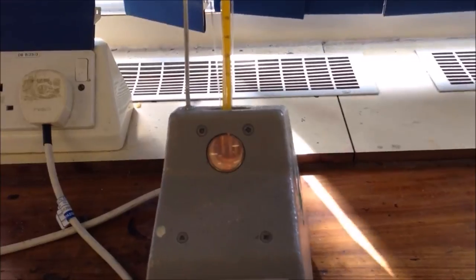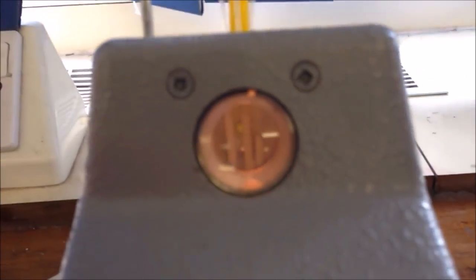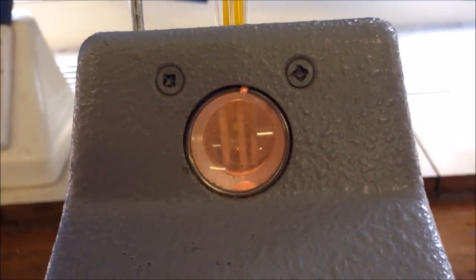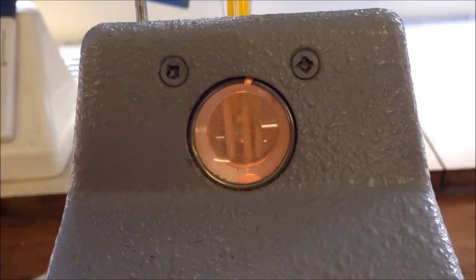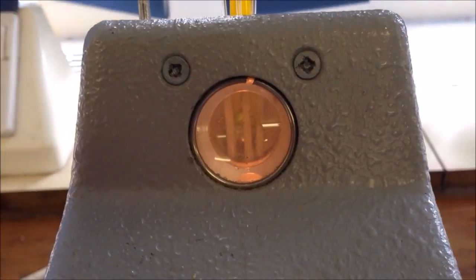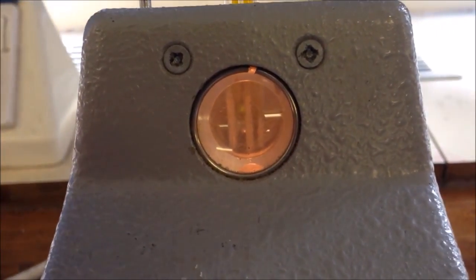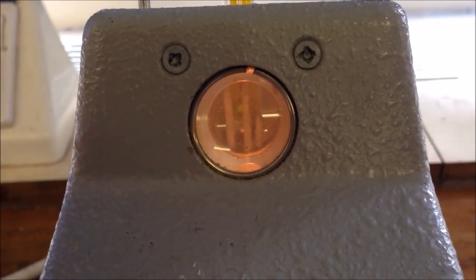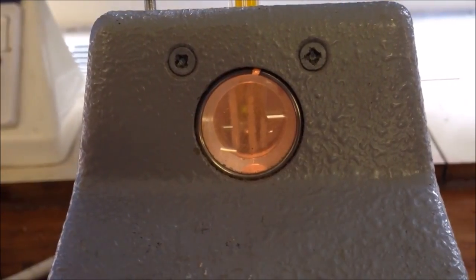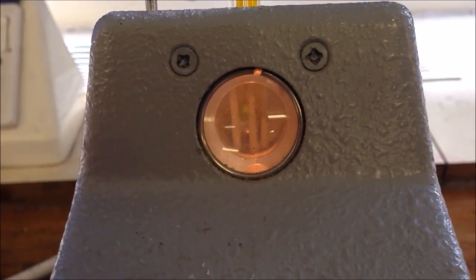So now we have set up the apparatus and we can see through this little hole here we can see our 3 samples. What we need to be watching is for when they melt and they should all melt at a certain point. It shouldn't be over a range and that will tell us that it is a pure sample.